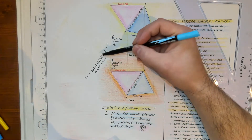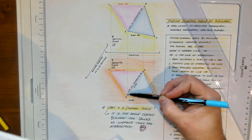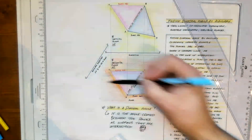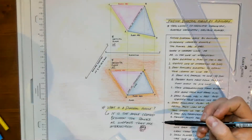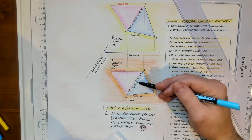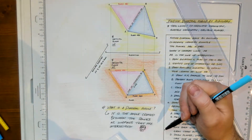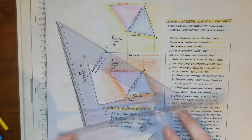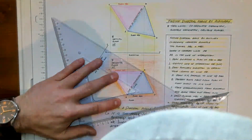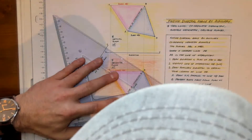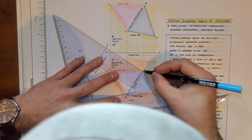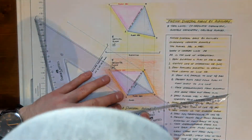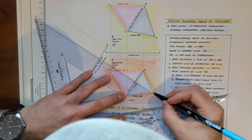When we set up an auxiliary view parallel to a specific line — for example line AB — what we get is the true length of that line in the view we create. That's what we want in this first step: the true length of AB. I'm going to use my set squares to project out from the plan. I'll take point B, project it out — don't worry about the length of the line, just project it out. I have pre-measured some of the material so mine should be landing in certain spots.